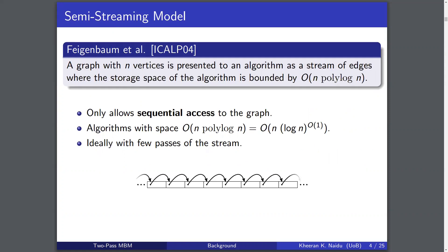In the semi-streaming model, given a graph with n vertices, an algorithm is only allowed sequential access to its edges, and using at most O(n poly log n) space, it has to output a solution or an approximate solution to the problem. An algorithm ideally uses only a few passes of the stream to accomplish this.